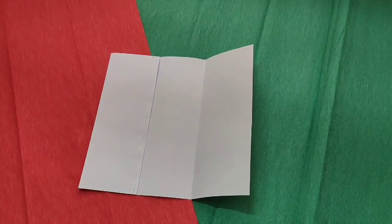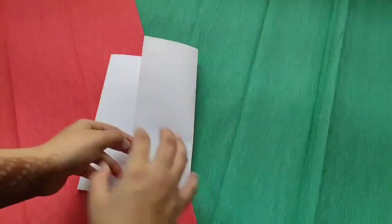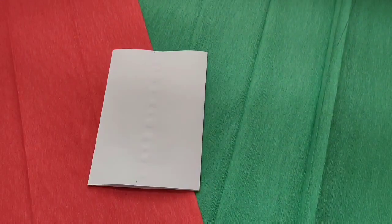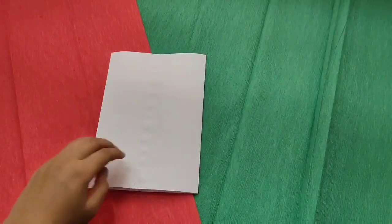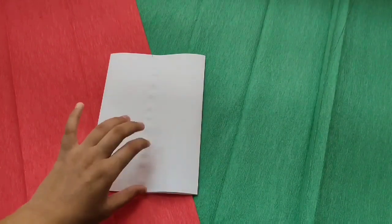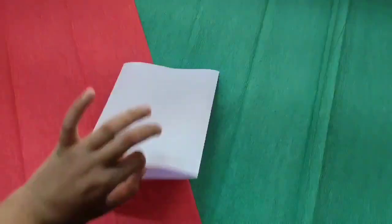Put some glue and stick this here. When you are sticking, don't forget to smudge the gum. And this is how it looks now. It looks somewhat like an envelope.